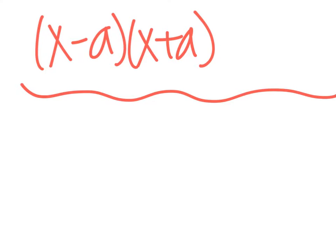The first one is when I have (x-a)(x+a). Notice they both have x and a, and one has a minus, one has a plus. Anytime you have (x-a)(x+a), this works out to be x²-a².